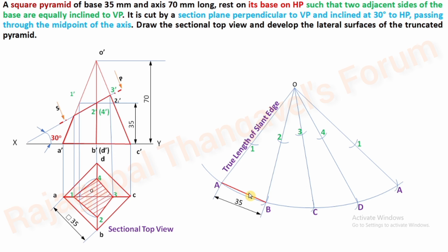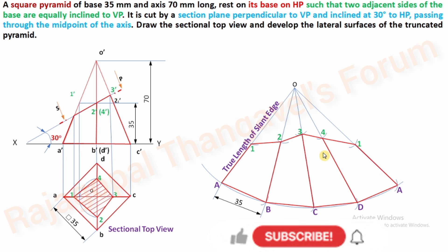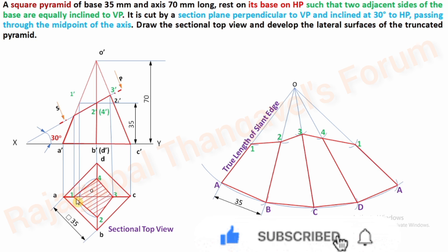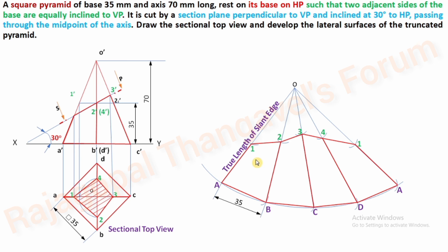Now join all the base points: A to B, B to C, C to D, D to A. Then join A to 1, 1 to 4, 4 to 3, 3 to 2, 2 to 1, and 1 to A. These are the remaining portions of the solid — convert them into thick lines. Referring to the front and top view: 1' to A' is a remaining portion, corresponding to 1 to A; similarly 2 to B, 3 to C, 4 to D. The intermediate remaining slant edges are thus converted into thick lines.